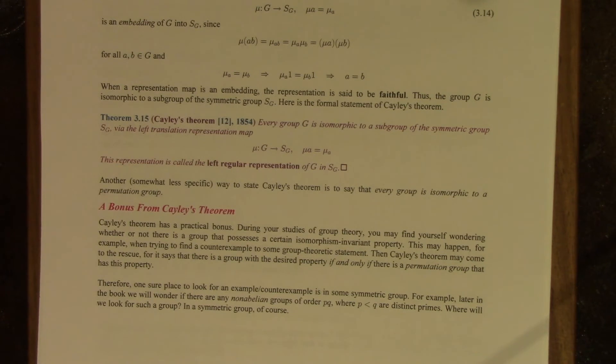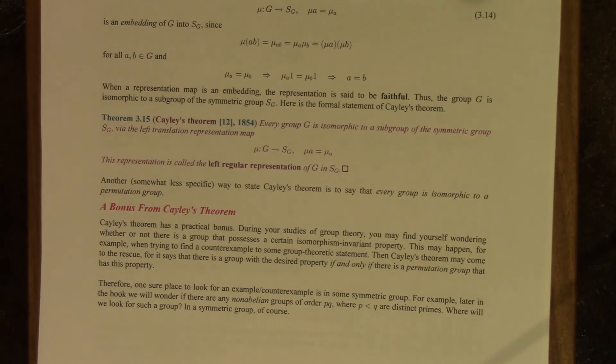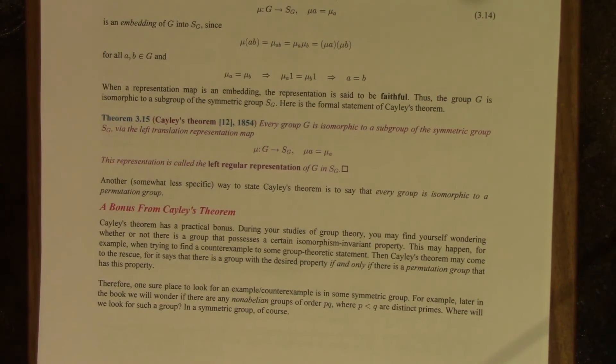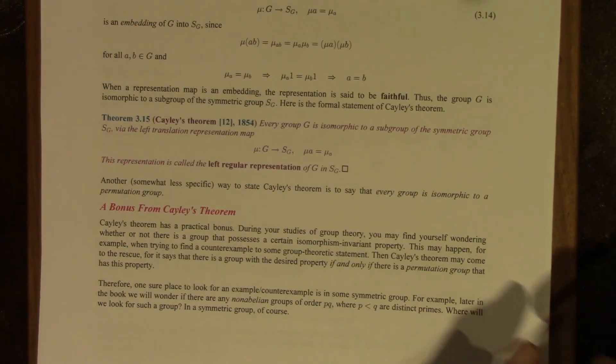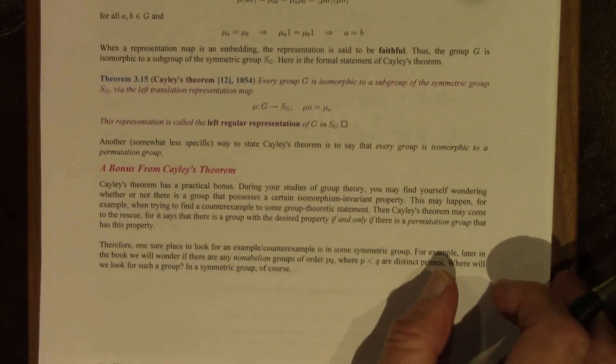Another somewhat less specific way to state Cayley's theorem is to say that every group is isomorphic to a permutation group. Remember, that means a subgroup of the symmetric group. It doesn't tell us which symmetric group, but it gets the main point across. And there is a bonus, you might say, that we get from Cayley's theorem.